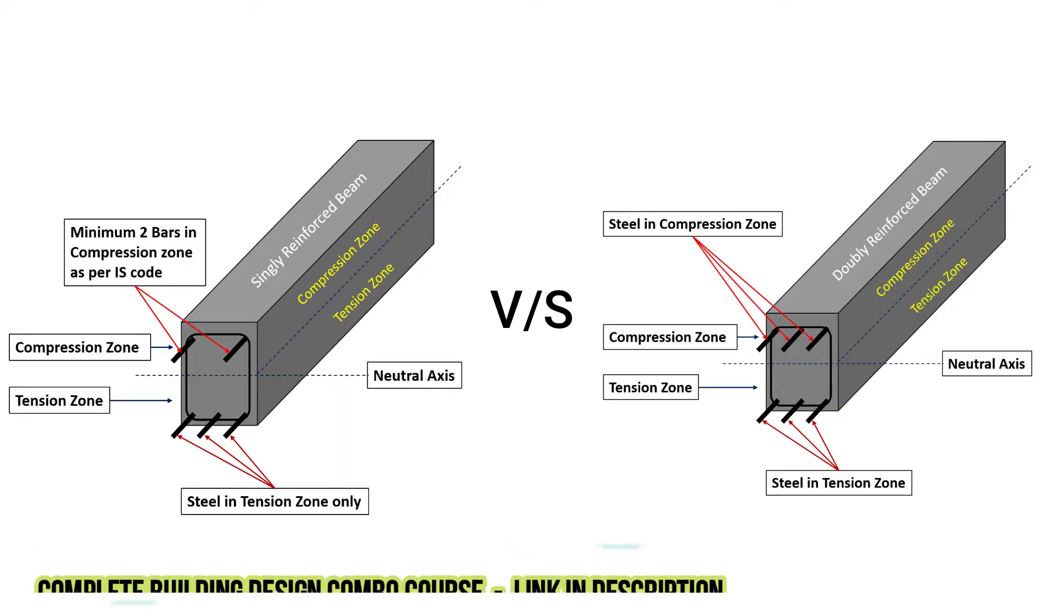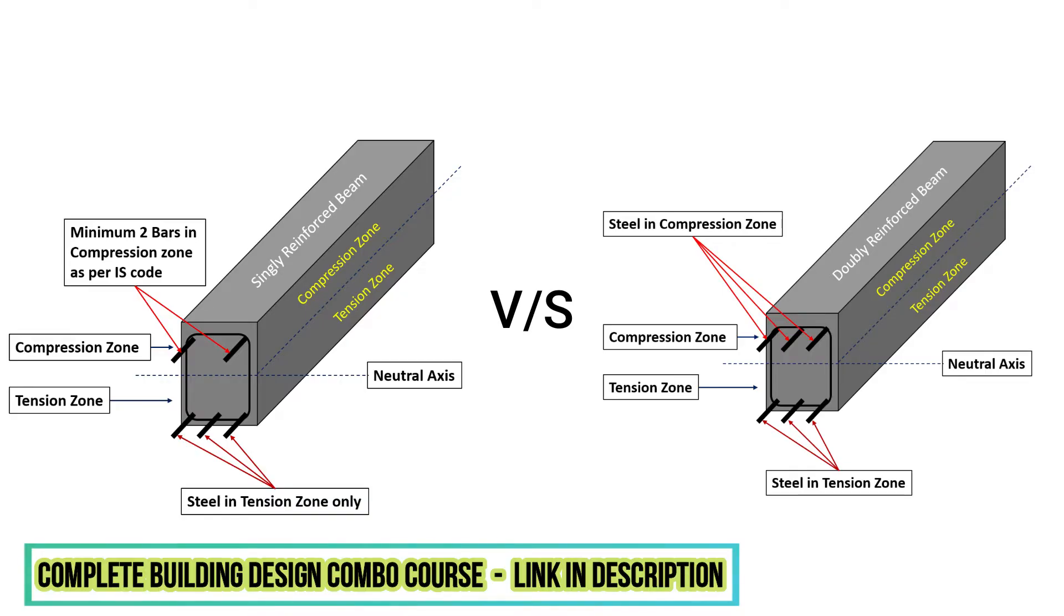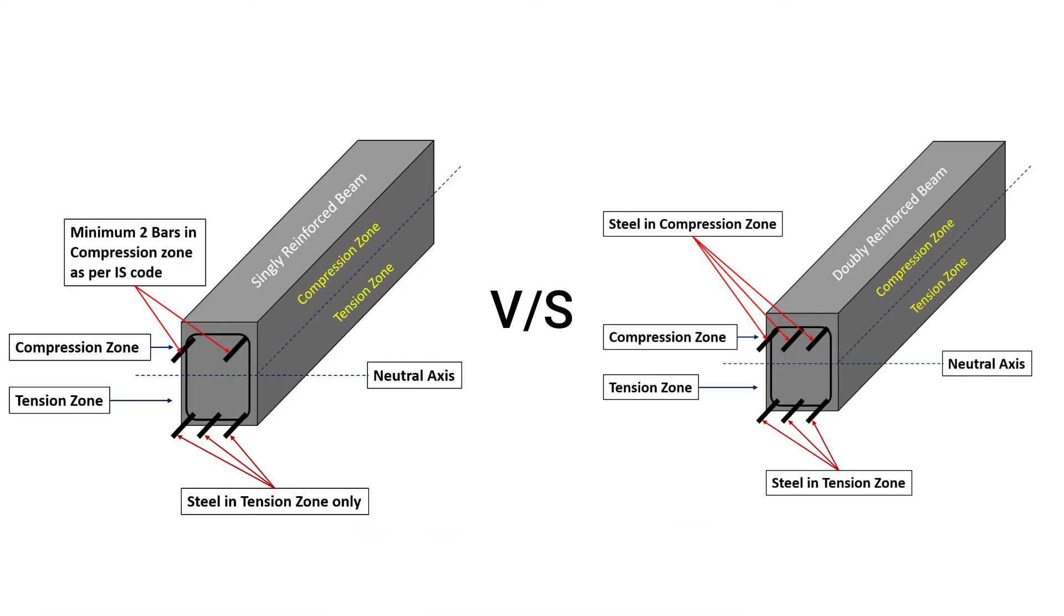In conclusion, the choice between a singly and doubly reinforced beam depends on the load which the beam has to carry and the strength of the concrete. If the load is relatively small and the concrete is strong enough to handle the compression without reinforcement, a singly reinforced beam may be used. However, if the load is greater and the concrete alone is not strong enough to handle the compression forces, a doubly reinforced beam is necessary.